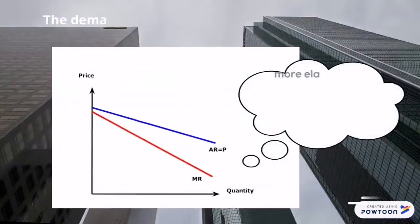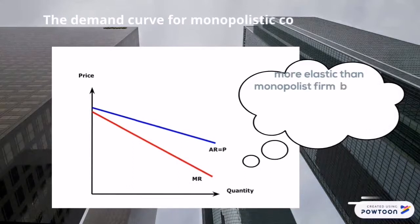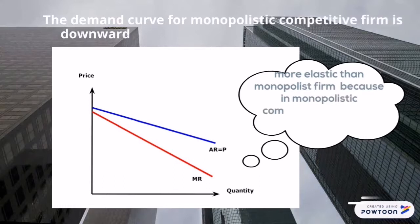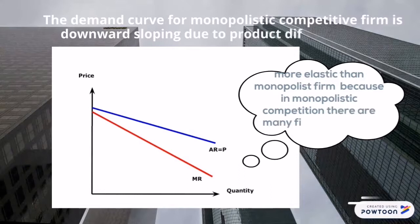The demand curve for monopolistic competitive firms is downward sloping due to product differentiation, as shown in the diagram. The demand curve for monopolistic competitive firms is more elastic than the demand curve for monopolist firms, because in monopolistic competition there are many firms and many substitutes.